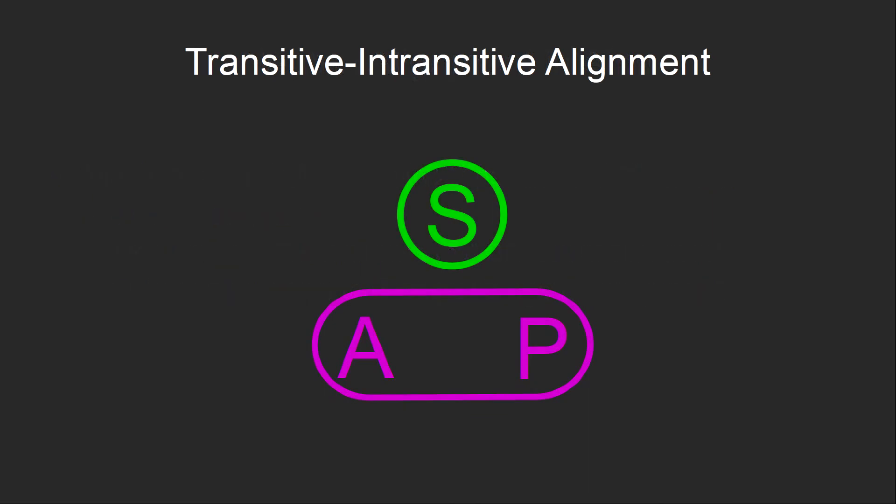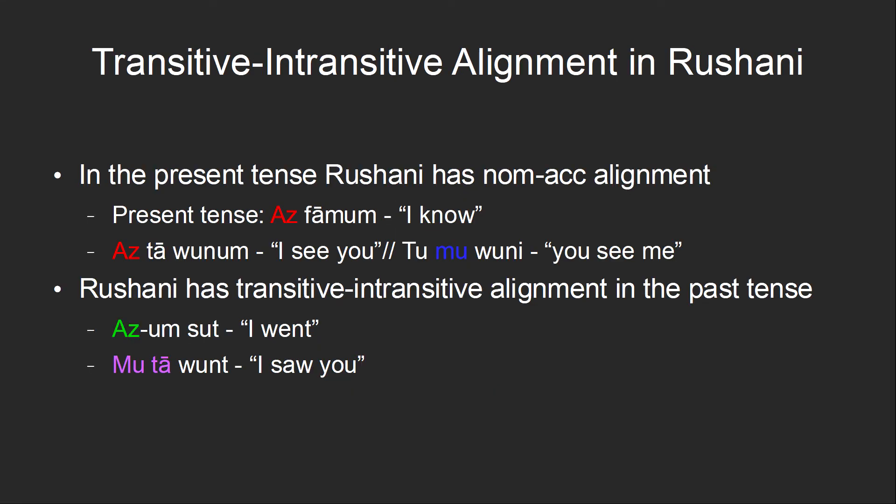The last way that we can group the subject, agent, and patient is to treat the subject distinctly as the intransitive case, and then treat the agent and patient similarly as the transitive case. This sort of alignment is very rare, found in only a handful of languages in Central Asia. It combines the unnecessary complexity of tripartite alignment with the ambiguity of neutral alignment — a sort of worst possible combination. Nevertheless, it is found in a few languages, for example Rushani, which is spoken in Afghanistan and Tajikistan. In the present tense, Rushani has a normal nominative-accusative alignment, but in the past tense it uses a transitive-intransitive alignment. The subject uses the same form as the present tense nominative form, while both the agent and patient use the same forms as the present tense accusative. The agent and patient are still distinguished by word order.